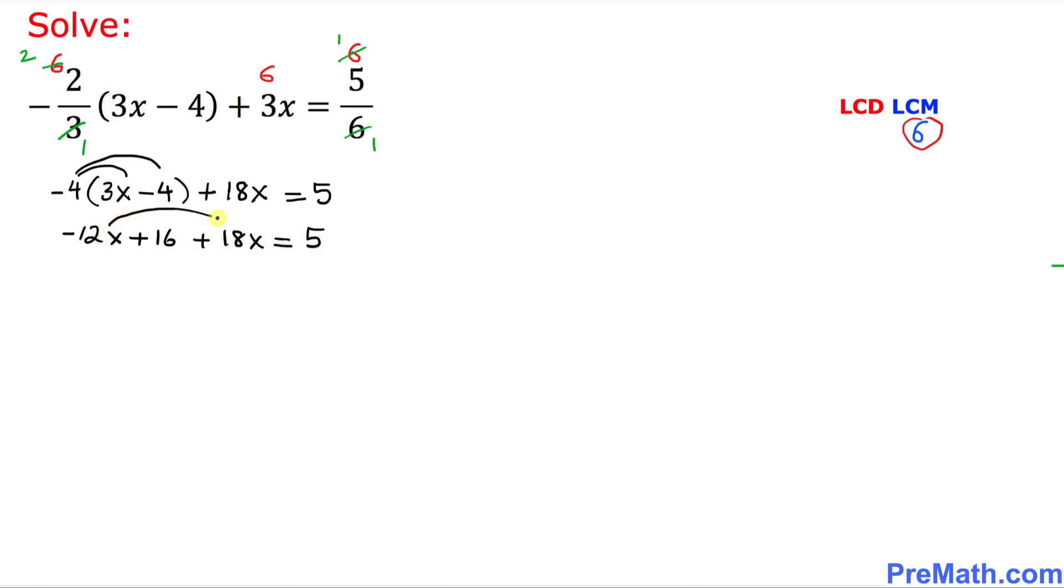Let's combine the like terms. So that is going to give us 6x plus 16 equals to simply 5.